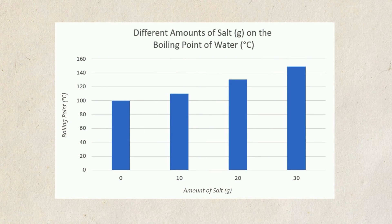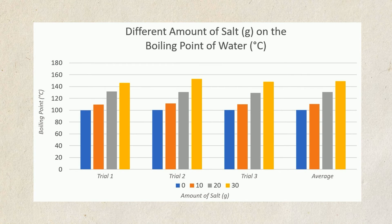In this example, I just graphed the average, but you may graph all the three trials to show multiple bars per independent variable like this.